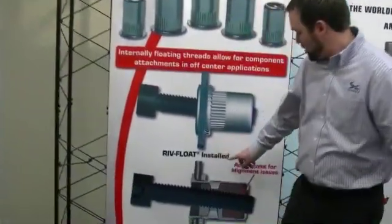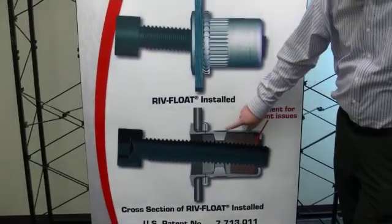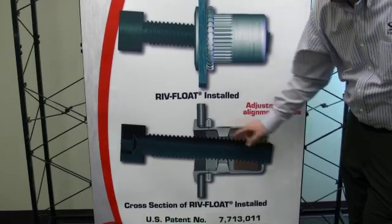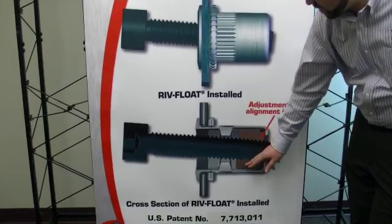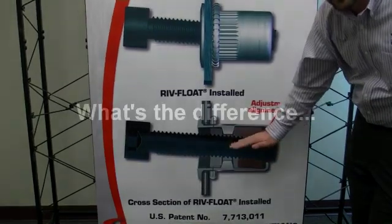As you can see from this picture that shows the cross section of the Riv Float, the Riv Float was developed with a shell and a nut that fits within that shell. The nut is able to float within the shell, side to side, 30 thousandths, and also offers angular adjustment.